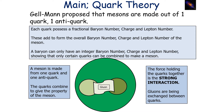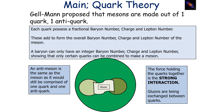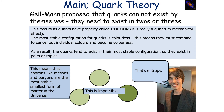Gell-Mann also proposed that mesons are made out of one quark, one antiquark, and this means that we can add the quark's baryon number, charge, and lepton numbers to give the overall properties of the meson. It's important to note that an anti-meson is the same as a meson, as it would still be comprised of one quark, one antiquark. Gell-Mann also proposed that quarks cannot exist by themselves — they need to exist in twos or threes. This occurs because quarks have a property called colour.